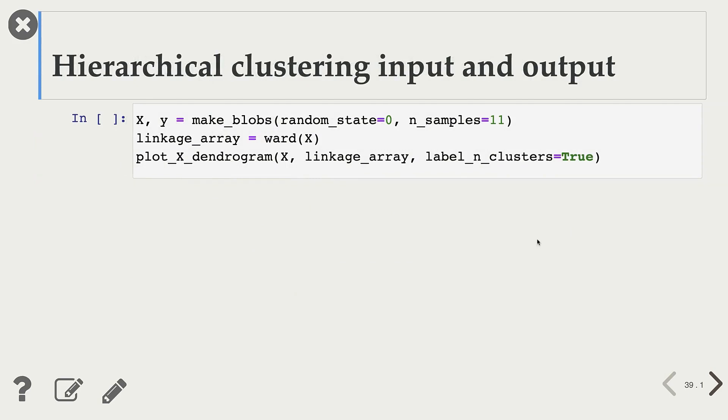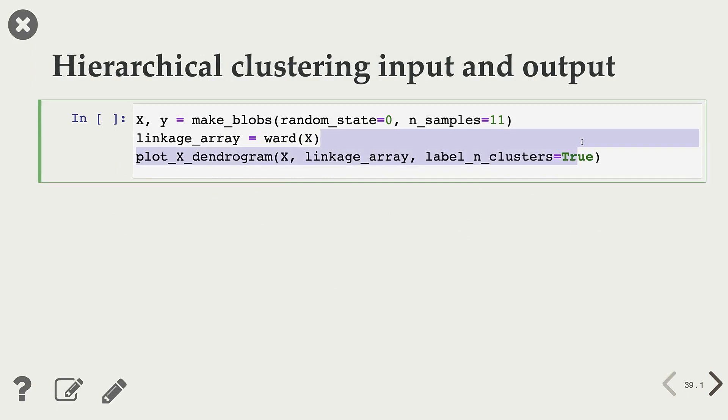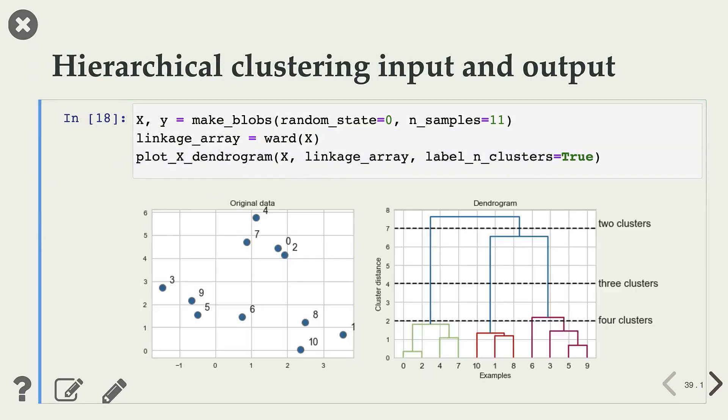Let's look at an example input and output for hierarchical clustering. I'm creating some toy data here. Our data has 11 examples, and this is our dendrogram. This is the output of hierarchical clustering.